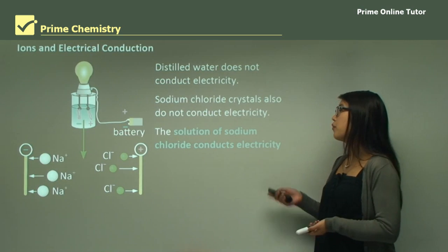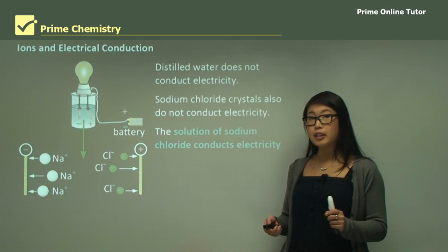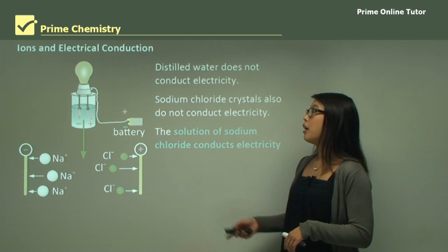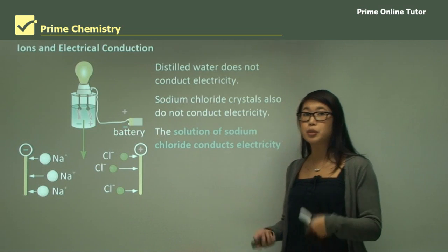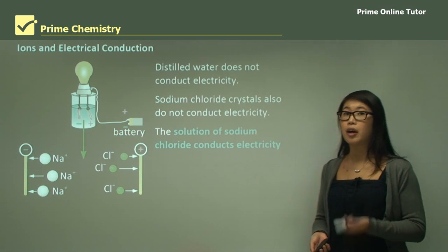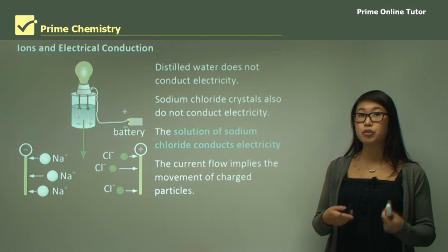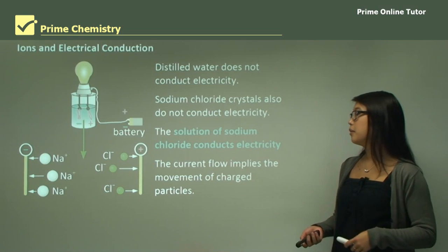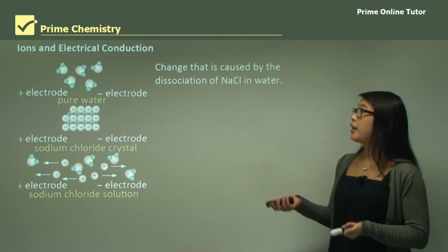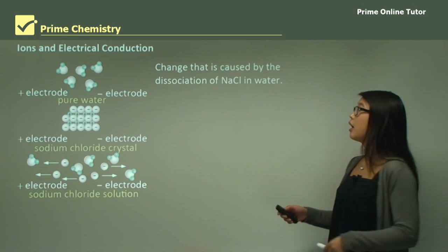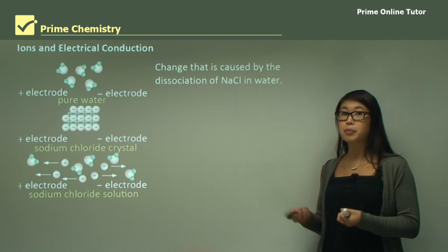But when we put sodium chloride into water, let it dissolve, and form a solution, it does conduct electricity. When we put the electrodes in with the battery on, the light turns on because there is a continuous current. This current flow implies the movement of charged particles — ions — and the electrical conduction is caused by the dissociation of sodium and chloride into water.